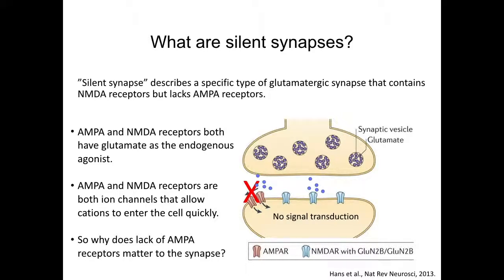AMPA and NMDA receptors both have glutamate as the endogenous agonist. AMPA and NMDA receptors are both ion channels that allow cations to enter the cell. Normally, a functional synapse contains both AMPA and NMDA receptors. So why does eliminating AMPA receptors produce a silent synapse?